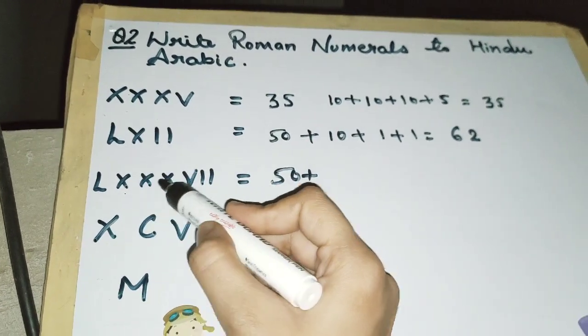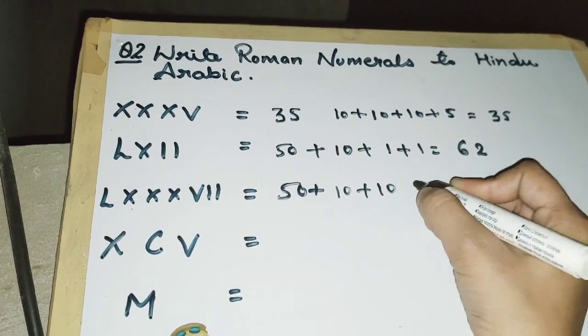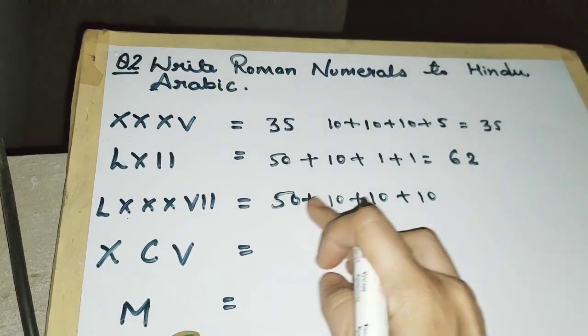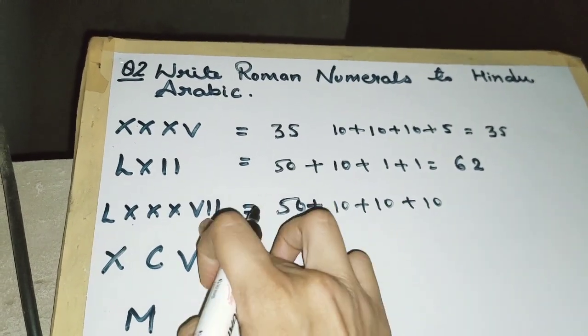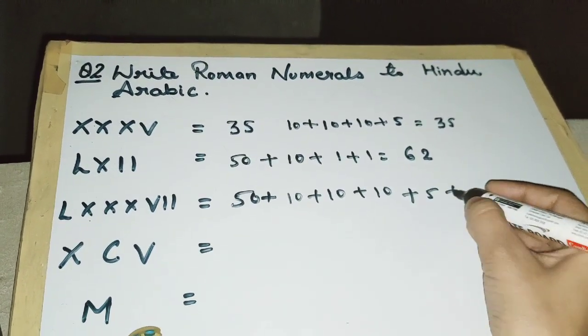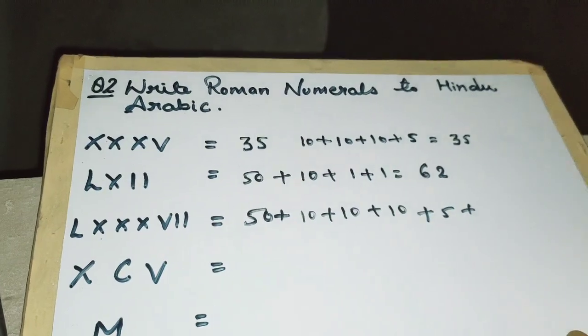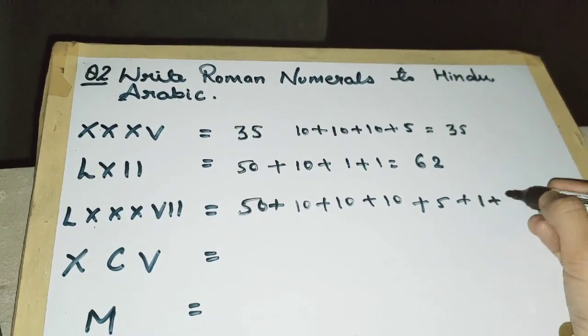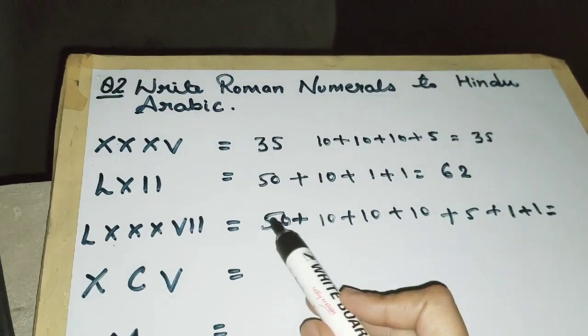is 5, and then I two times, so 1 + 1. This will be 50, 60, 70, 80, 85, 86, 87. So this is 87.